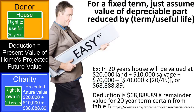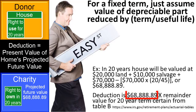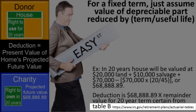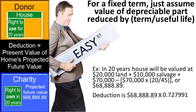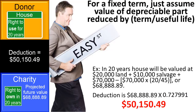Based on the idea that the charity is projected to receive property worth $68,888.89 in 20 years, the deduction for such a transfer would be $68,888.89 multiplied by the remainder interest factor for a term certain of 20 years. These remainder interest factors are published in Table B, Term Certain Factors, available for download at the IRS website. For a 20-year term when the Section 7520 rate was 1.6% at the time of the gift, the remainder factor would be 0.727991. Thus, the deduction would be $68,888.89 multiplied by 0.727991, or $50,150.49.